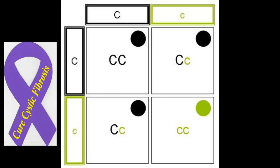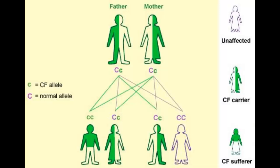In this Punnett square, the capital C represents the dominant allele, meaning someone would not have cystic fibrosis, while the lowercase c represents the recessive allele, meaning the person would have cystic fibrosis. Someone with CC or Cc would not have the disorder, because the dominant C represents the healthy allele. Someone with cc — both recessive alleles — would have cystic fibrosis.